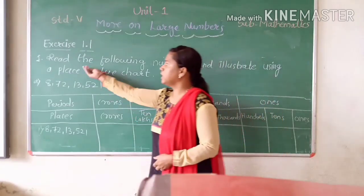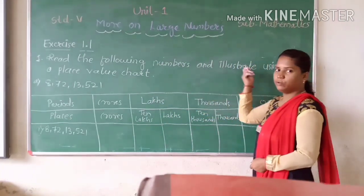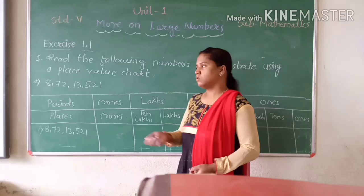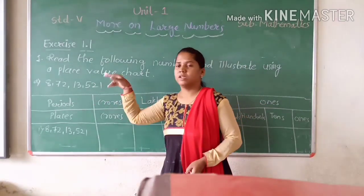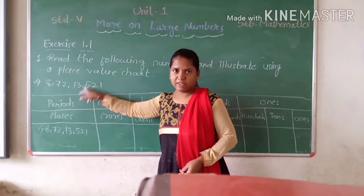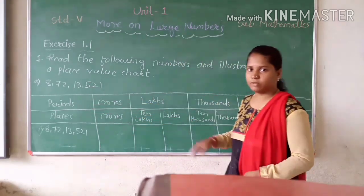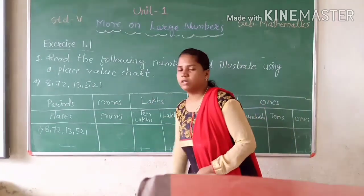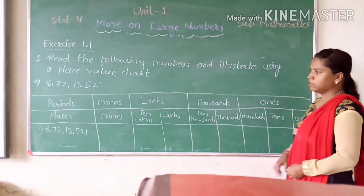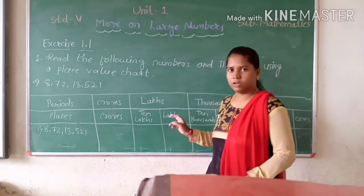Question number 1 is: we will read the numbers and illustrate using a place value chart. For number 1.1, first we have to read it, then adjust the number in a place value chart. Here I have drawn a place value chart already. See here - 2 rows you have to fill in, 9 columns.